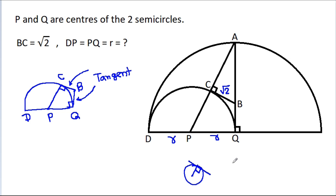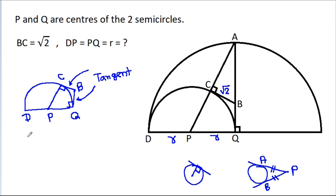Also, in any circle, from any external point, if we draw two tangents to the circle — say PA and PB — then PA equals PB. So here, BC will be equal to BQ. Therefore BQ is also equal to square root of 2.